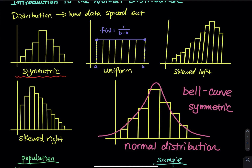The mean is the average. Normal distribution means most of the observations, most of the data — using the language of area under the curve — are concentrated right in the middle. That is where the peak is; the tallest place of the mountain is right in the middle. Most of the observation or most of the area are concentrated right in the middle.